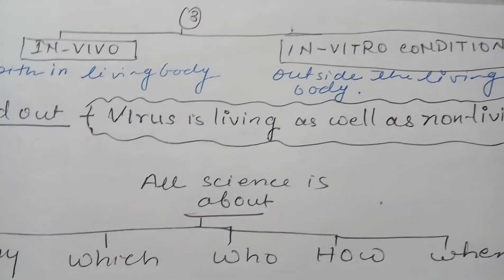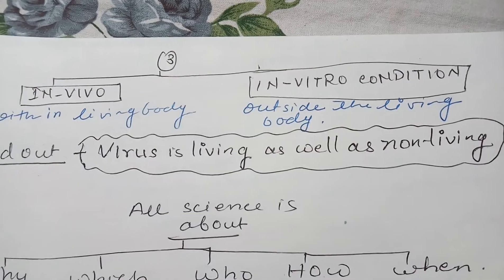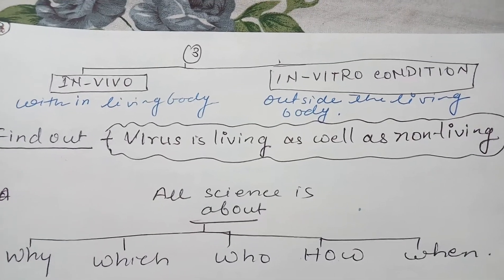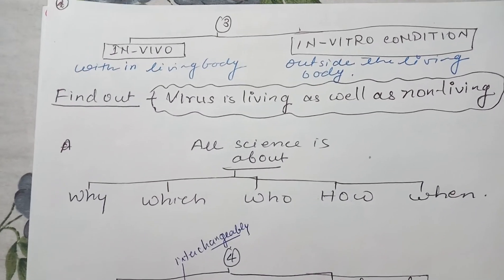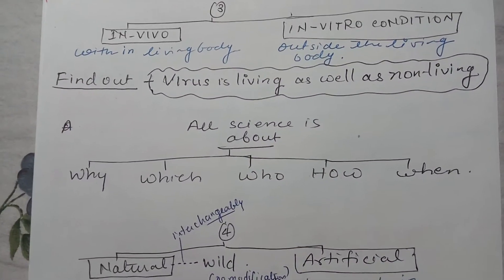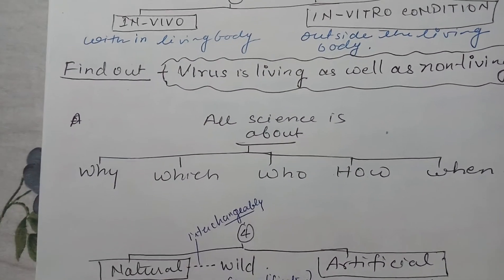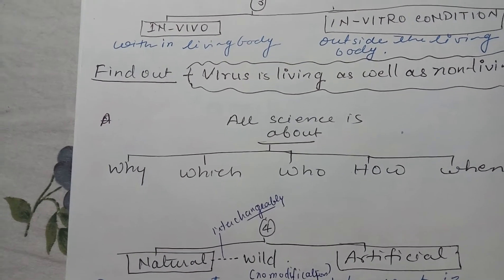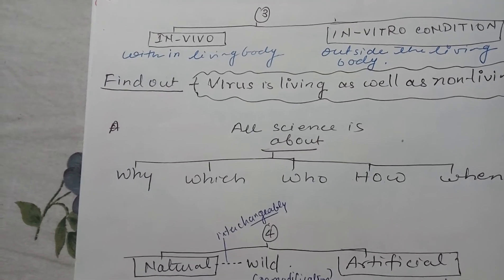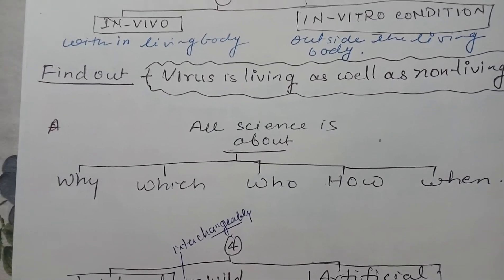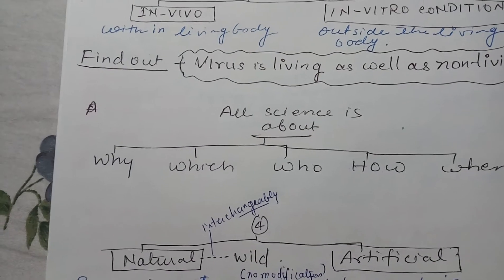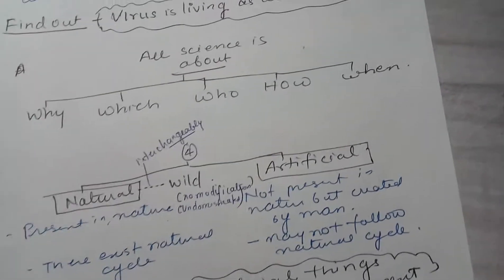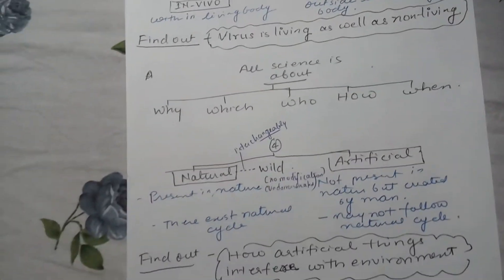You also have to find out whether a virus is living or non-living — or whether it lives on the borderline of living and non-living, and why. Science is all about asking why, which, who, how, and when. Unless you have these questions while studying, asking why this happens, how it is done, and when it was done, we are not on the right track. A lot of questions should arise while you are studying.